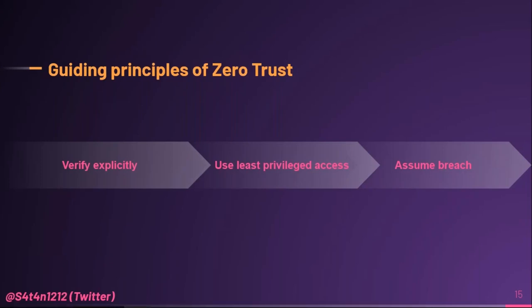The guiding principles of the zero trust model are mainly three: verify explicitly, use least privilege access, and assume breach. 'Verify explicitly' means always authenticate and authorize based on all available data points — including user identity, location, device health, service or workload, data classification, and anomalies. 'Use least privilege access' means limiting user access with just-in-time and just-enough access, risk-based adaptive policies, and data protection. 'Assume breach' means minimizing the blast radius and preventing lateral movement by segmenting access by network, user, devices, and app awareness — always encrypting all sessions end-to-end and using analytics to get visibility and improve defenses.